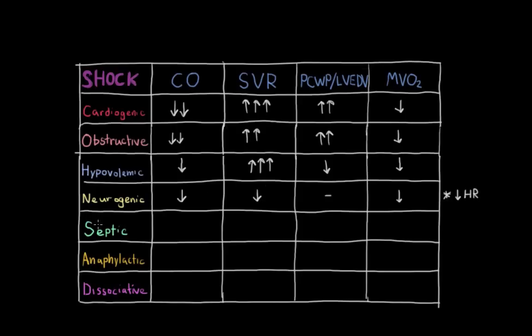Next, we have septic shock. Now, the cause for shock in sepsis is the immune system. The immune system responds to infective material and causes systemic vascular dilation, vasodilation. So vascular resistance drops tremendously. To compensate for this, the heart initially tries to pump faster.